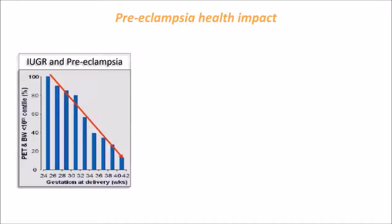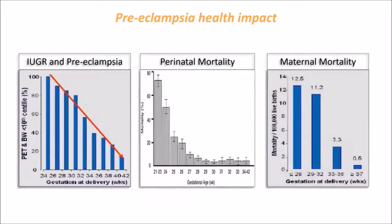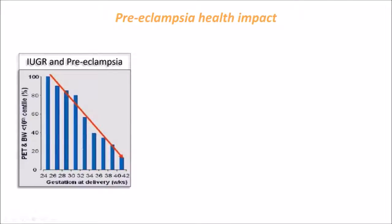If we dissect the health impact of pre-eclampsia, two important facts emerge. First, IUGR is strongly correlated with pre-eclampsia at early gestations. Looking at this graph, the x-axis shows the percentage of pregnant women with pre-eclampsia and IUGR — defined as birth weight under the 10th centile. The great majority of women who have IUGR will also have pre-eclampsia — up to 70–80% up to 32 weeks gestation. From 34 weeks onwards, that correlation decreases to approximately 30–40%.